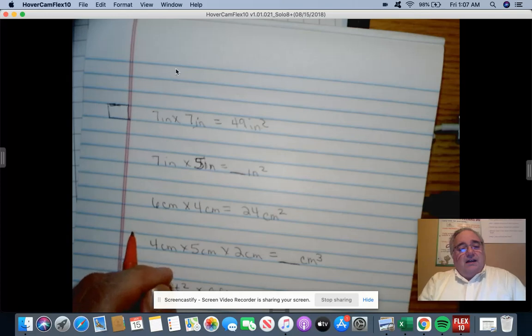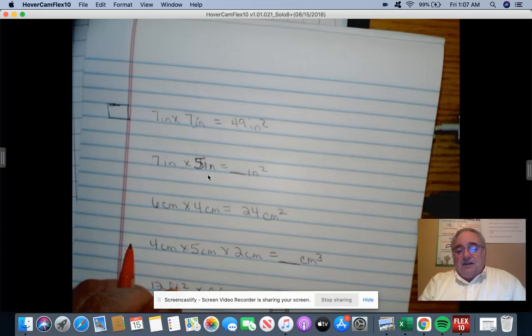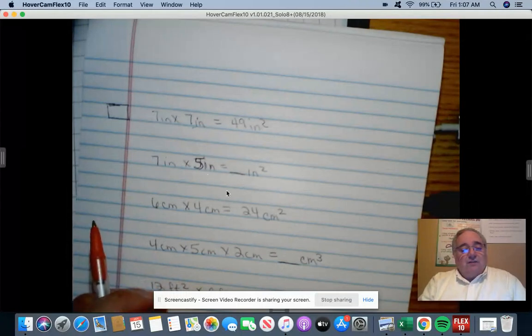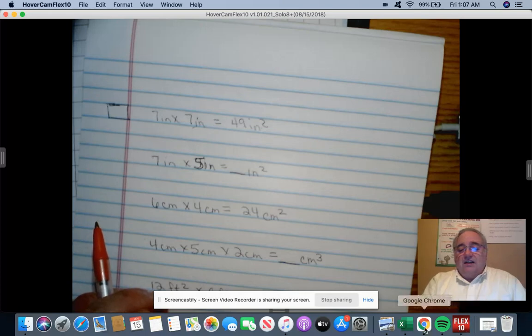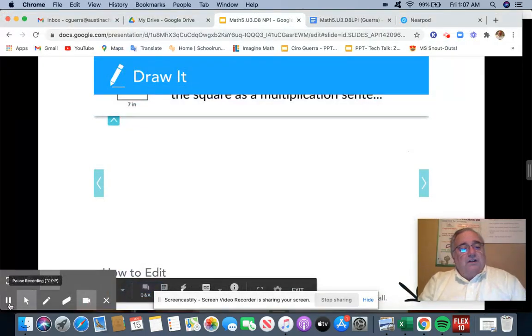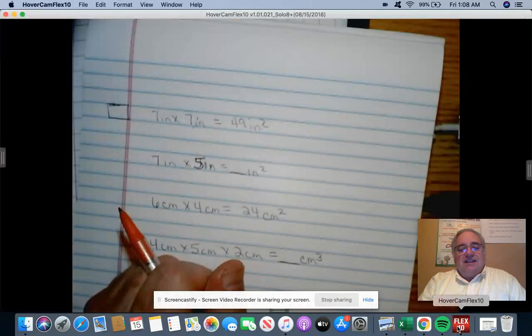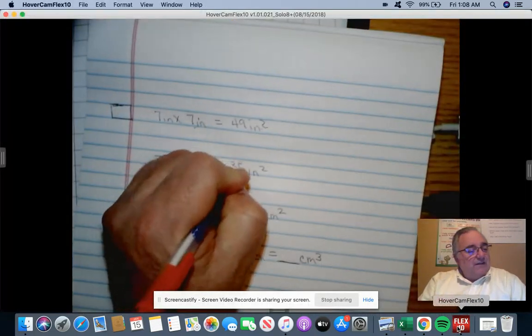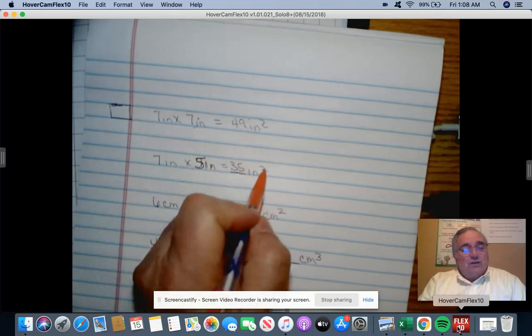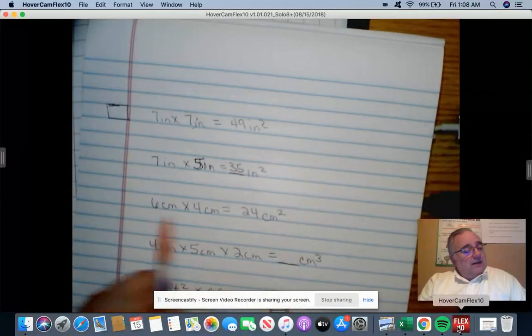The next one is a rectangle with the length of seven inches times five inches. Teachers, I want you to pause the video so that our scholars can write their answer in the open-ended question. Pausing in three, two, one. Excellent, glad to see you're learning your multiplication. Yes, seven times five is 35, but remember to put the unit squared because we're taking the area.